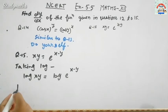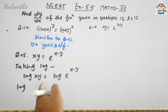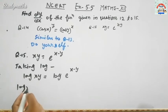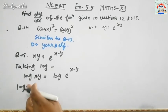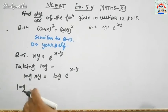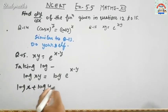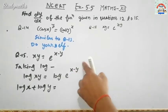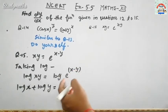Taking log on both sides, we have log M into N property. What is the property of log M into N? Log M into N equals log M plus log N. So, log X plus log Y equals log of e raised to the power X minus Y.